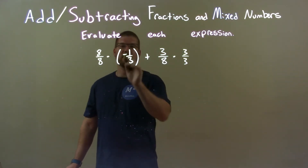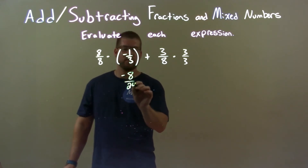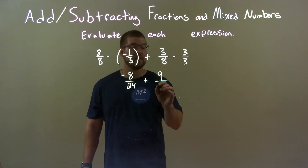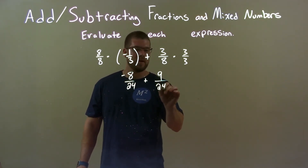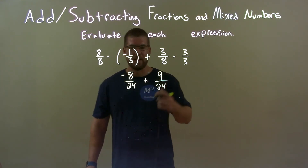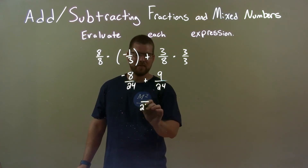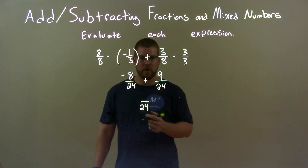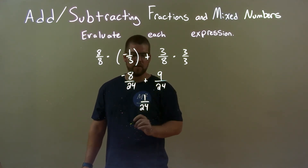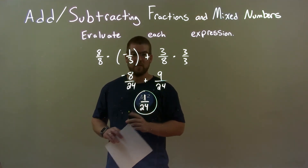Now let's simplify. Eight times negative one is negative eight, and eight times three is twenty-four. Plus, three times three is nine, and eight times three is twenty-four as well. This always gives you the same base, which we need to add these two numbers together. Now the bases are the same — that was the whole point. So twenty-four stays there. Now we just add the numerators: negative eight plus nine is a positive one. So we have one over twenty-four. That is already simplified, so that is our final answer.